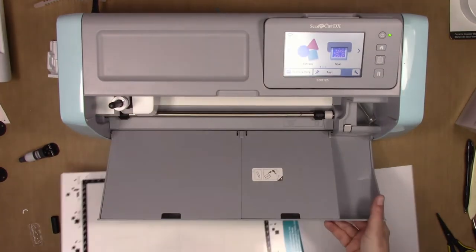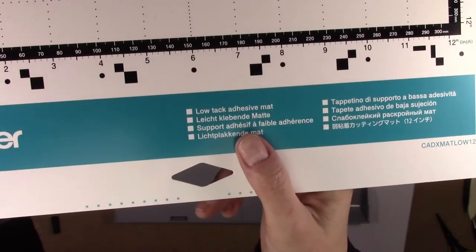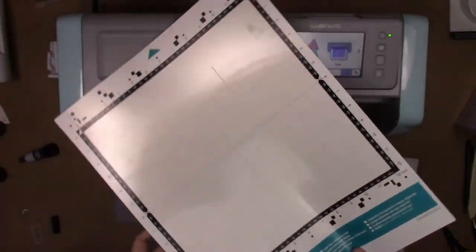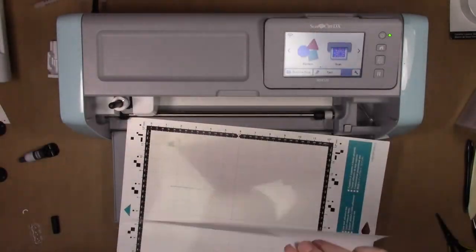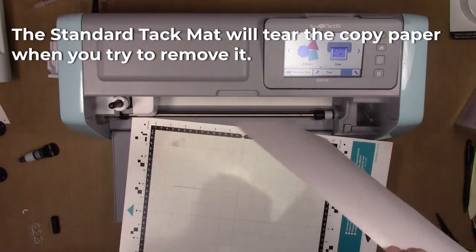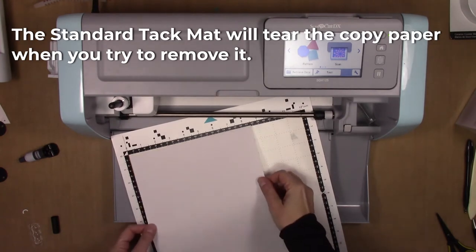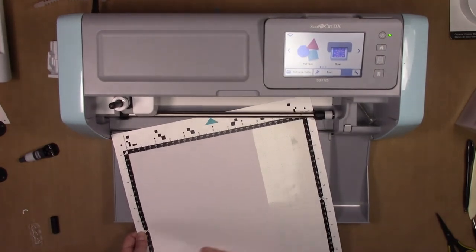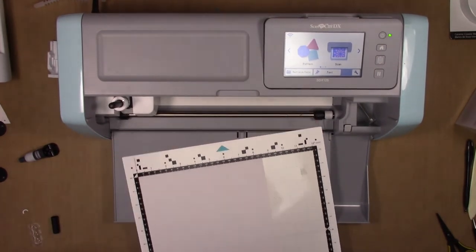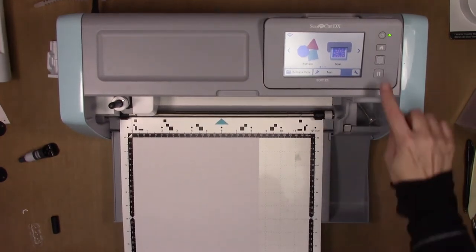For the mat, you are going to need a low tack adhesive mat because what we're doing is using copy paper, really thin copy paper, to draw this design on. That's all you need. You don't need anything fancy or special. I'm going to put this in the upper left since I know that's where our design was, and I'm going to load my mat.